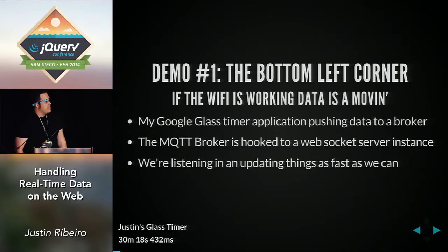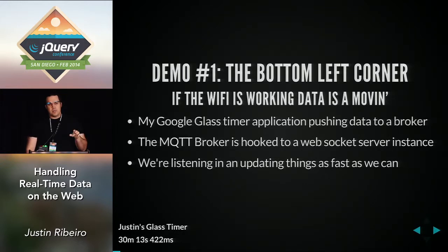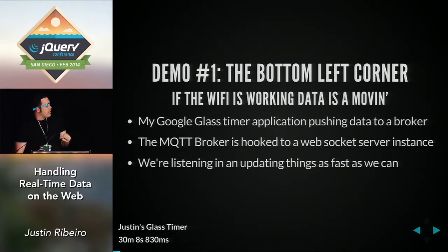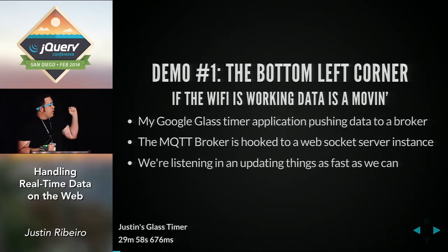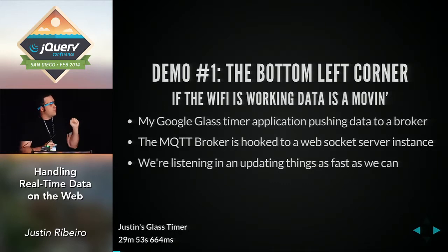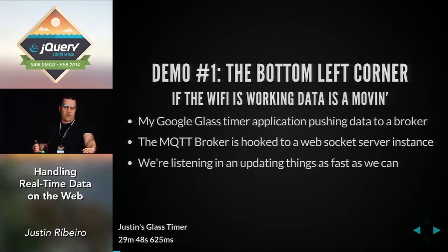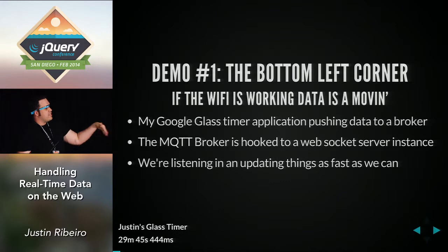The timer application is written in Java and uses the GDK on Glass — please hold your stones until after the talk. The MQTT broker takes the message from the timer and sends it down. MQTT stands for message queuing telemetry transport. It's a wonderful open source little service with all kinds of implementations. It talks to the web server, which has a socket that pulls stuff off a preferred topic, then starts listening through JavaScript and updates as fast as we can.